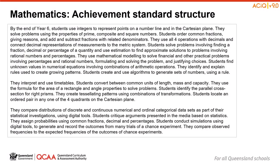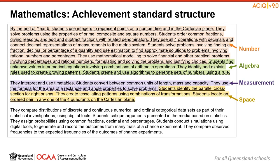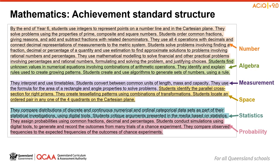On the screen is the Year 6 Achievement Standard presented in three paragraphs. The Version 9 Achievement Standard is sequenced in the same order that content strands appear in the curriculum. In the first paragraph, you will find number content itemised first, then algebra content. In the second paragraph, you will find measurement content at the top, then followed by space content. And finally, in the third paragraph, you will find statistics content itemised first, and then probability content itemised last.